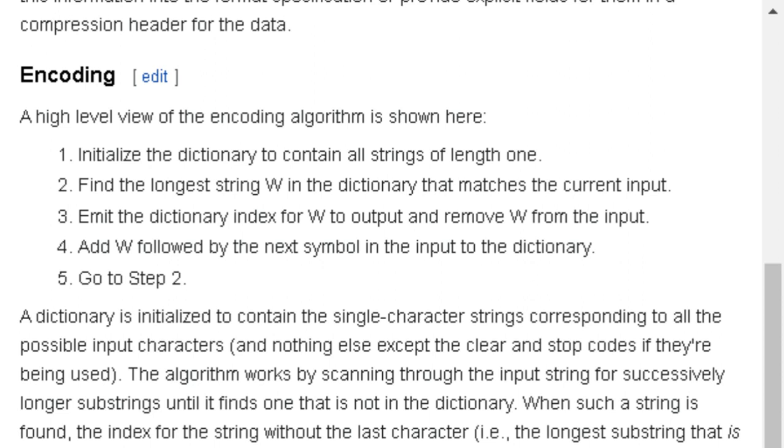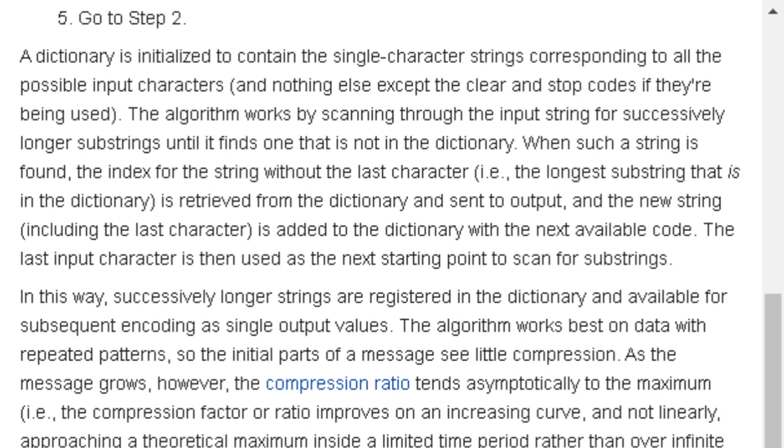A dictionary is initialized to contain the single character strings corresponding to all the possible input characters, and nothing else except the clear and stop codes if they're being used. The algorithm works by scanning through the input strings for successively longer substrings until it finds one that is not in the dictionary. When such a string is found, the index for the string without the last character is retrieved from the dictionary and sent to the output, and the new string including the last character is added to the dictionary with the next available code. The last input character is then used as the next starting point.